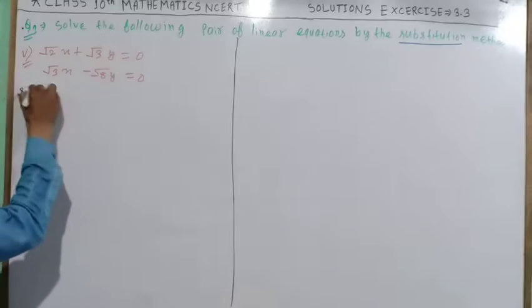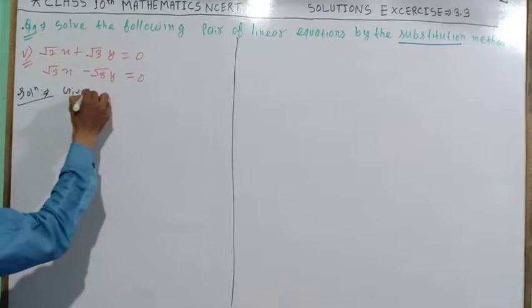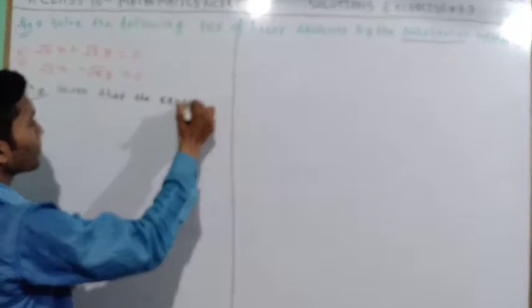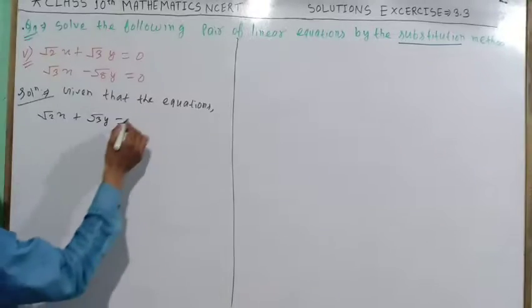So, √2x + √3y equals 0. √2x + √3y equals 0.